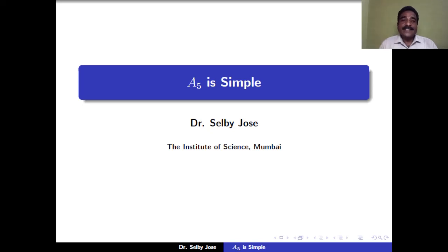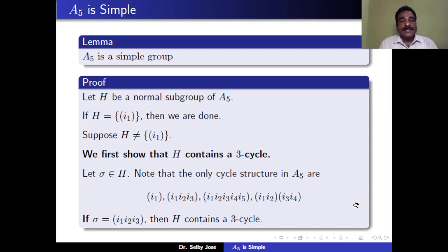In the last session we discussed about the simple group. In this session, we prove that A5 is a simple group. A simple group is a group which does not have any proper normal subgroup — that means the only normal subgroups of G are the trivial subgroup and the group itself. So here we need to show that A5 does not have any proper normal subgroup.